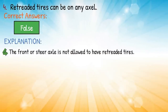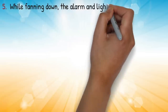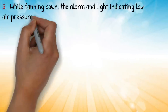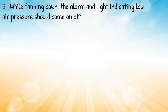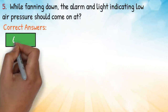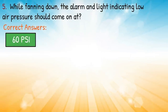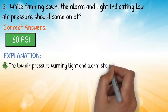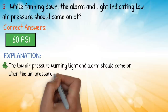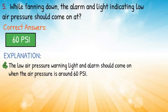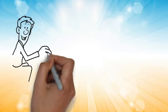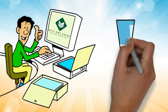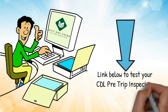Question four: retreaded tires can be on any axle — correct answer: false. Explanation: the front or steer axle is not allowed to have retreaded tires. Question five: while fanning down, the alarm and light indicating low air pressure should come on at — correct answer: 60 PSI. Explanation: the low air pressure warning light and alarm should come on when the air pressure is around 60 PSI.